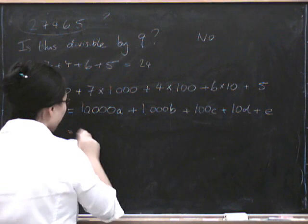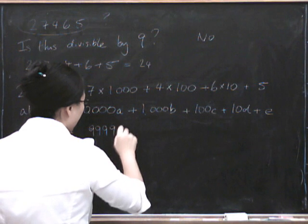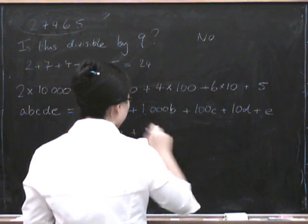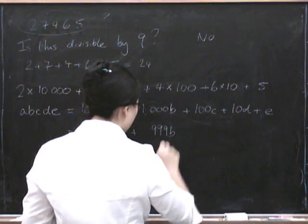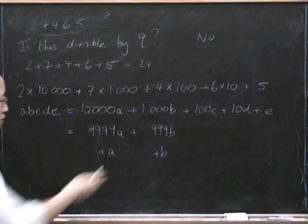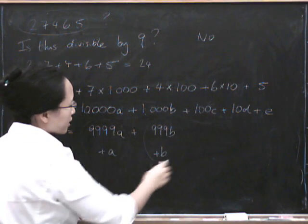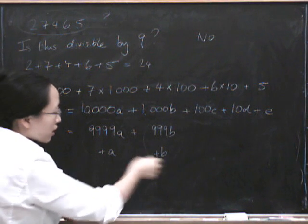So this is the same as we split this up. We get 9,999A, plus A. And then here we get 999B, plus B, right? Because this together gives me 1,000A. This together gives me 10,000A. This together gives me 1,000B.